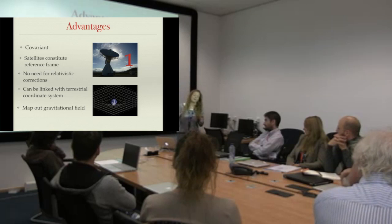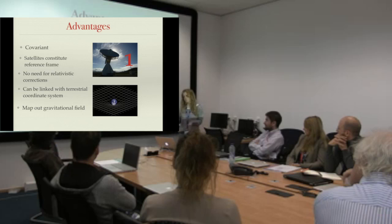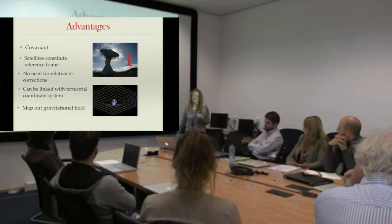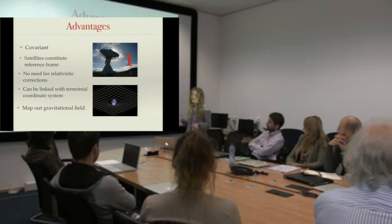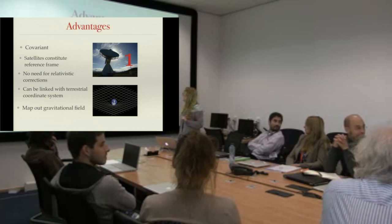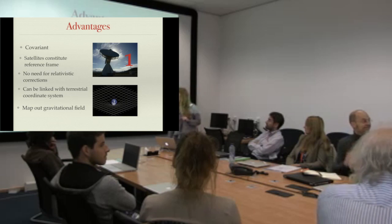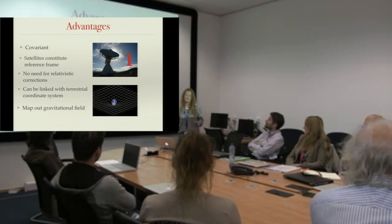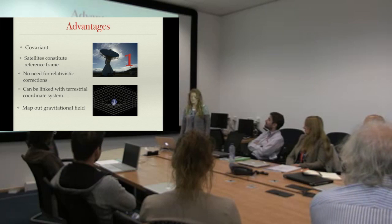The satellites set up their own reference frame and can tell a person on earth where they are in that frame. But obviously the person on earth doesn't want to know where they are in the satellite reference frame — they just want to know where they are on earth. So you can link the systems, but for that you only need one ground station, which is still a much simpler system than what's in place today.